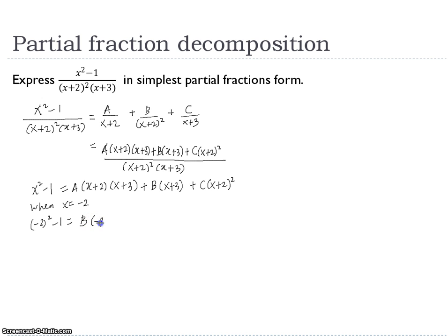Substitute negative 2 plus 3. So the same thing. Negative 2 plus 2, we get 0 here, so nothing left here. 3 minus 2, we get 1, 1B. So 4 minus 1, we have 3. So B equals 3. So we continue.